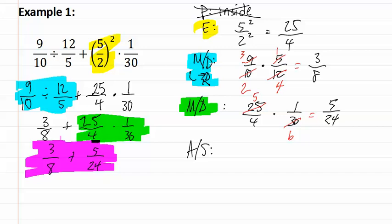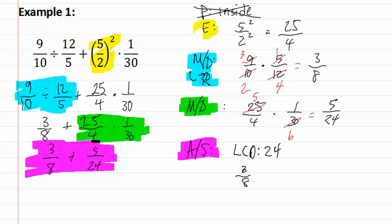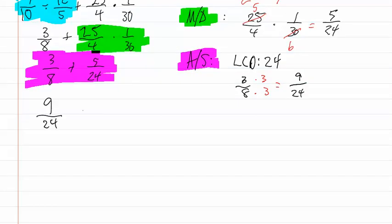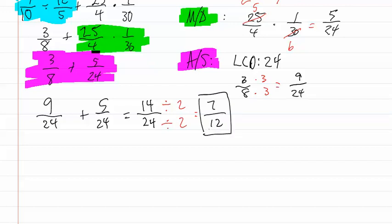Our denominators do not match, so we must find a least common denominator. Using mental math, twenty-four divided by eight gives us three, so our least common denominator is twenty-four. We just need to change three-eighths by multiplying it by three, giving us nine twenty-fourths. Now that our denominators match, we can add: nine plus five is fourteen over twenty-four. Remember, when you get to the end of the problem you must reduce. Both numbers are divisible by two, giving us seven-twelfths. Our final answer is seven-twelfths.